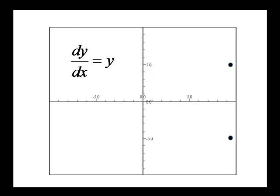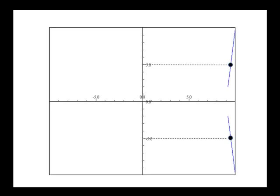Well, remember that the rate of change is equal to y. So whatever the y value is will give us the slope. So at the upper point, we have a slope of 5. At the lower point, we have a slope of negative 5. So we'll draw line segments that roughly have those slopes.